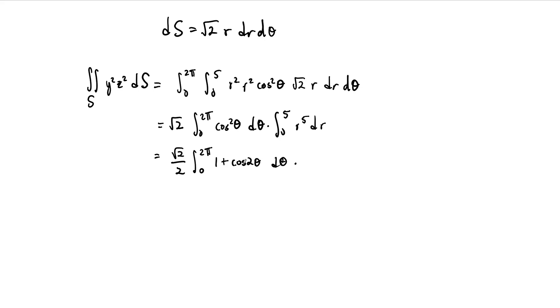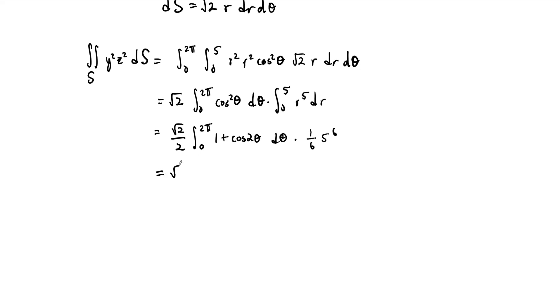This part, by the way, is gone at this point. Cosine of 2 theta—it's not gone, it's going to be 0 because you're integrating from 0 to 2 pi, and those are the same point here. And then this one, so in other words, this integral is just equal to 2 pi. And then this one is going to be 1 sixth times 5 to the 6th power. And again, this one's 2 pi. So we get root 2 over 2 times 2 pi times 1 over 6 times 5 to the 6th power.